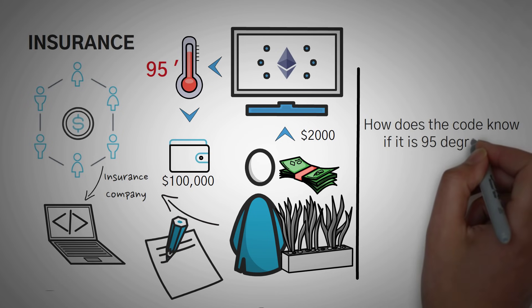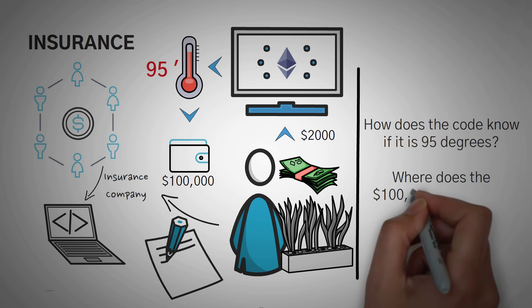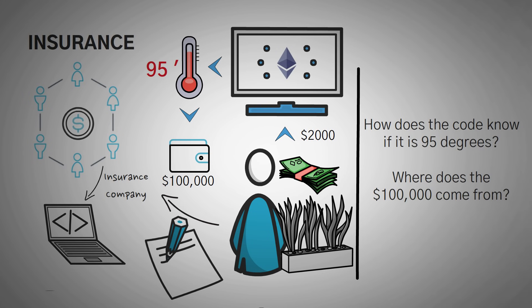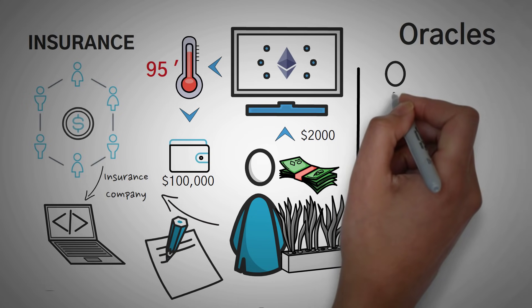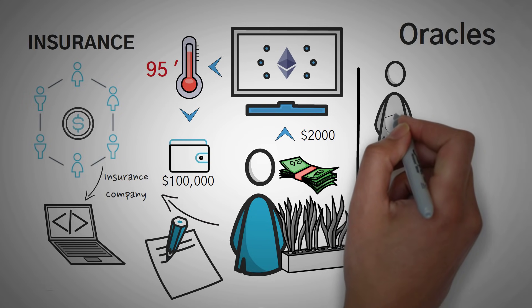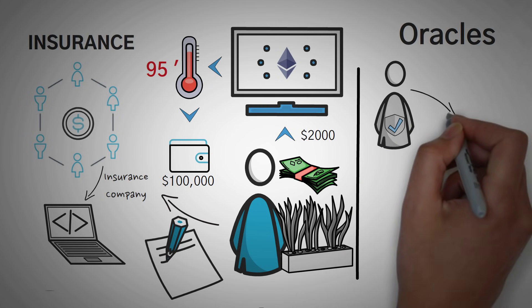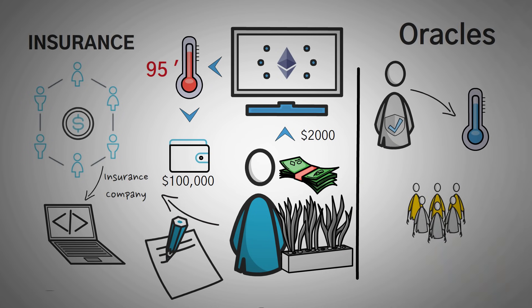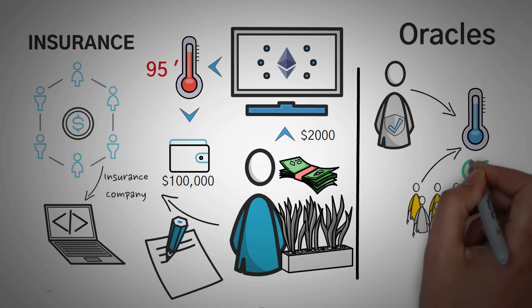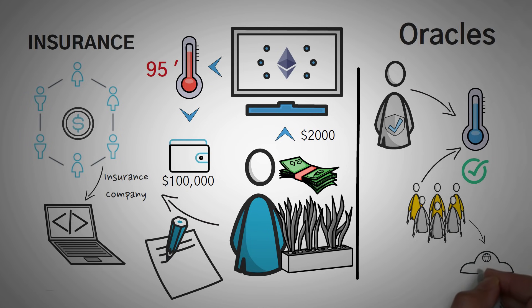How does the code know if it's 95 degrees Fahrenheit? And where does the $100,000 come from? Well, to connect the real world to the blockchain, we have to use something called oracles, which are trusted sources that become a bridge between the real world and the crypto world. We can create an oracle in our city that reads the temperature and is verified by a few people to make sure that it can't be frauded.